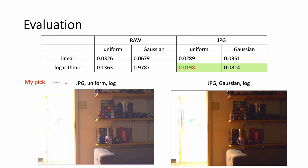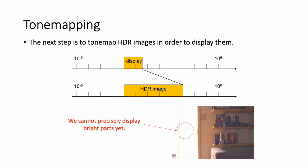Before observing the results, I worried about noise in the uniform weighting scheme case, but it seems to be constructed well. To display HDR images, we need to rescale values because we cannot precisely display bright parts yet. This process is called tone mapping.